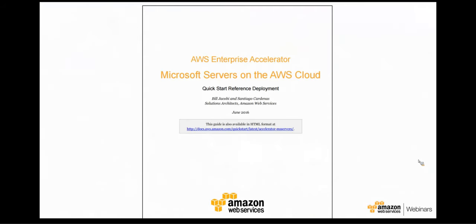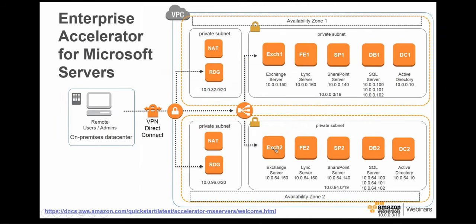What's more interesting for most customers is that we've released an enterprise accelerator called 'Microsoft Servers on the AWS Cloud.' This allows you to run Exchange, SharePoint, Lync, SQL Server, and Active Directory, all loaded in a single set of CloudFormation stacks at the push of a button using the same wizard. When you run the enterprise accelerator, what stands up is a full architecture with connectivity for remote users over VPN or Direct Connect.